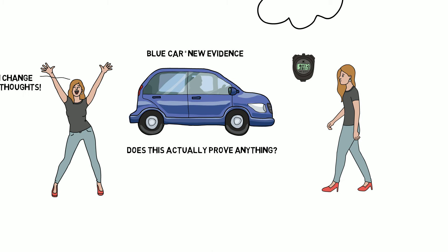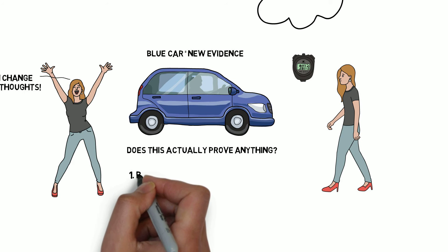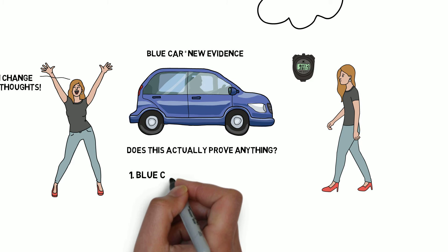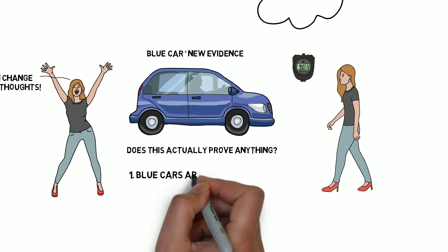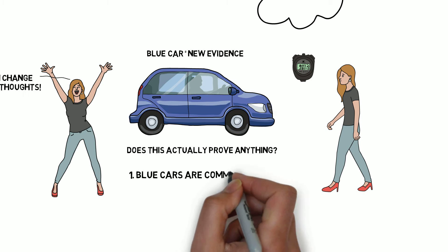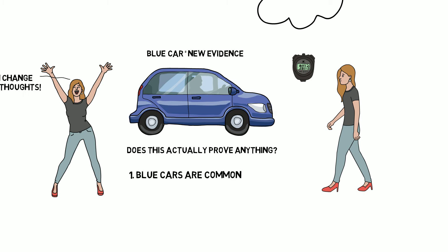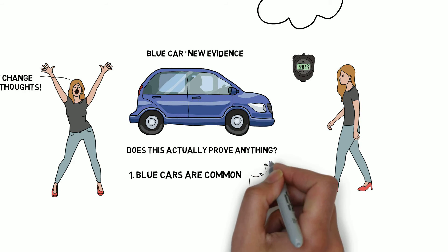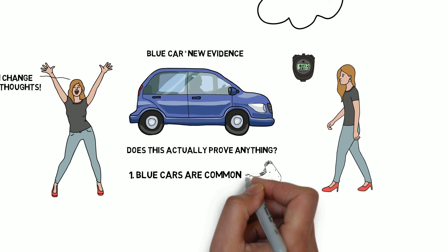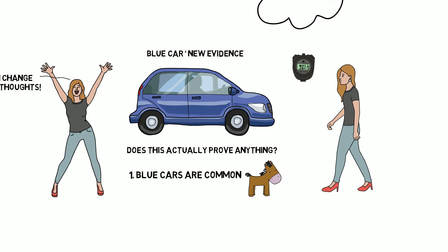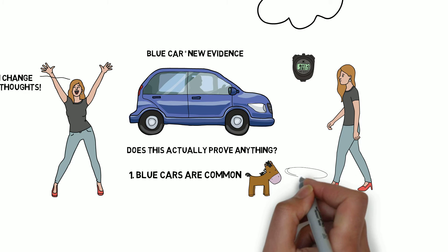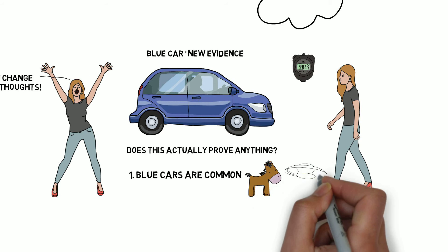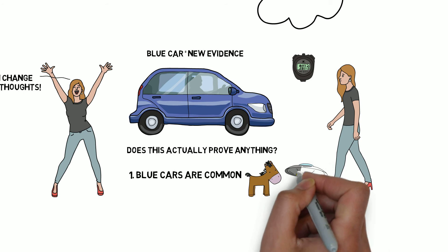Firstly, it's pretty common to see a blue car when you're out on a walk. It seems likely that whether Jane thought about a blue car or not, she would have come across a blue car on her stroll. Would this have happened if she picked a horse or a UFO to test out instead?